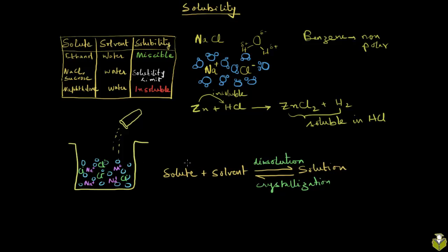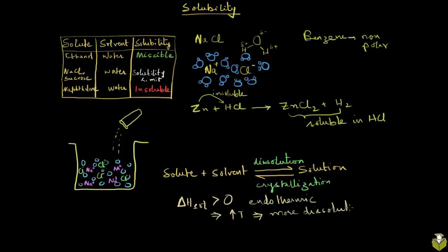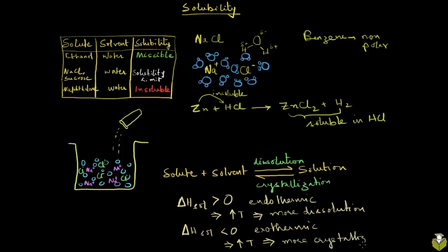How do we know whether solubility increases or decreases when you increase temperature? For a near-saturated solution, if the process of dissolution — the solute going into solution — is endothermic (ΔH_solution > 0), then by Le Chatelier's principle, an increase in temperature will cause more dissolution, making the solution unsaturated so you can dissolve more solute. Conversely, if ΔH_solution < 0 (exothermic), increasing temperature will drive the reverse process — more crystallization — so more solute comes out of solution rather than dissolving.